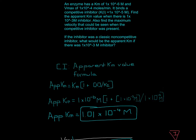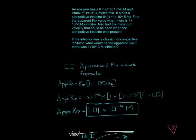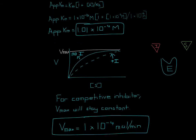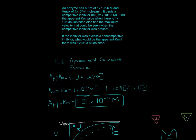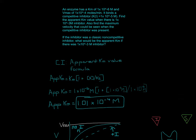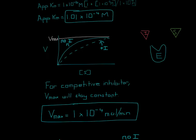The second part asks for the maximum velocity when the competitive inhibitor is present. This is more conceptual rather than a formula. For a competitive inhibitor, Vmax stays constant. So the Vmax will be the same as the one given in the problem: 1×10⁻⁴, and it will remain the same.